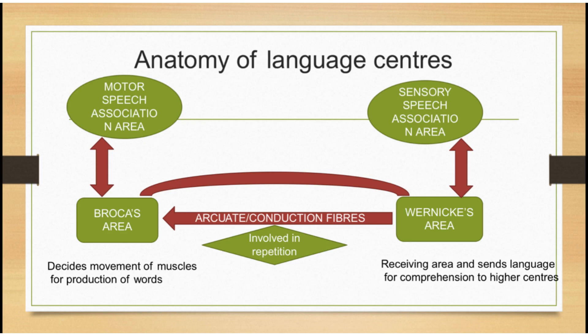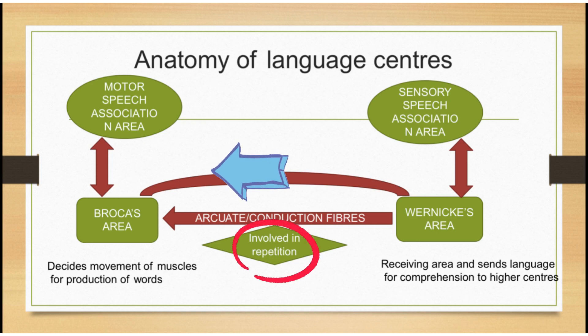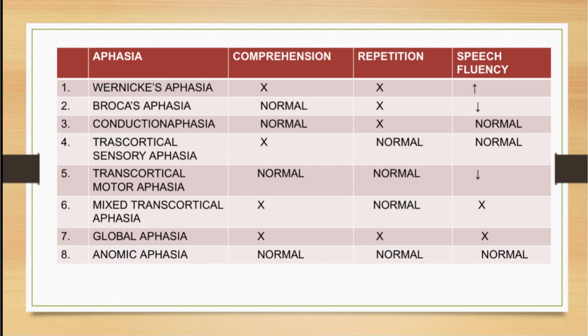Also, the connection between Wernicke's and Broca's area via the arcuate fibers leads to repetition of words without much processing in the higher centers. So repetition may be preserved even if the higher centers are damaged, as long as these three parts are still intact. Various types of aphasia can be differentiated by examining three important components of language: comprehension, repetition, and speech fluency.